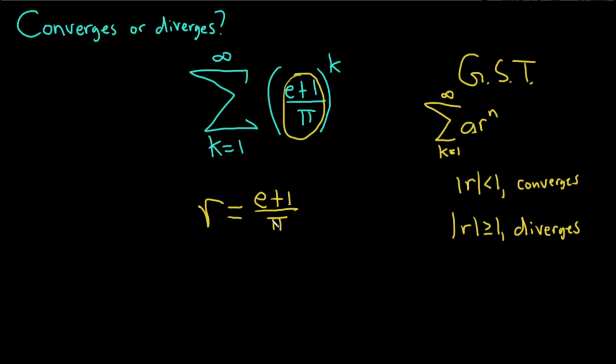So e is approximately 2.72 and pi is approximately 3.14. So this is approximately 2.72 plus 1 over 3.14, which is 3.72 over 3.14, roughly. And that's bigger than 1.